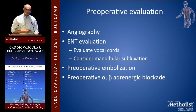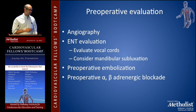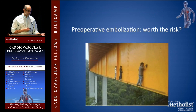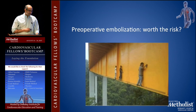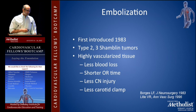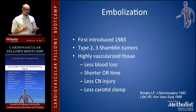Preoperative evaluation: for Shamblin 2 or 3 or a large carotid body tumor, you want angiography, get ENT involved to make sure the vocal cords are okay, consider nasotracheal intubation, and possibly mandibular subluxation for intraoperative carotid mobilization. Preoperative embolization — introduced in 1983 — was described for Shamblin 2 and 3 tumors to reduce intraoperative bleeding. However, anything more than 3 centimeters has so many feeding vessels that embolization is difficult; smaller tumors yield better embolization results.